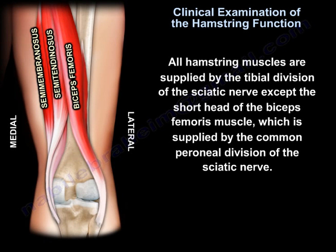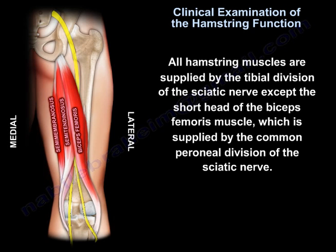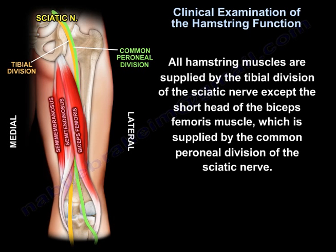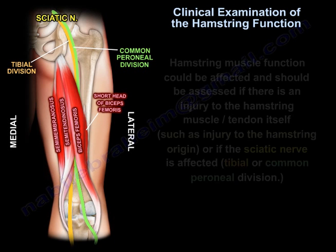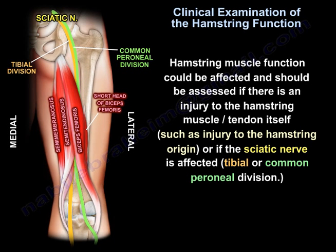All hamstring muscles are supplied by the tibial division of the sciatic nerve, except the short head of the biceps which is supplied by the common peroneal nerve. Hamstring muscle function can be affected and should be assessed if there is an injury to the hamstring muscle or tendon itself, as in injuries to the origin of the hamstring, or if the sciatic nerve is affected — tibial or common peroneal division.